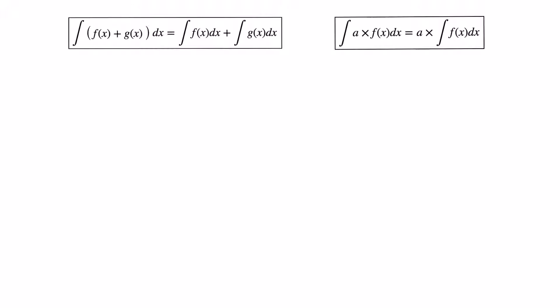Now, let's see how we can use this. For instance, let's say we're asked to integrate the integral of the sum of x squared plus x to the power of 5 dx. What this formula is telling us is that we can split this integral into two separate integrals, meaning we can write that this equals the integral of x squared dx plus the integral of x to the power of 5.